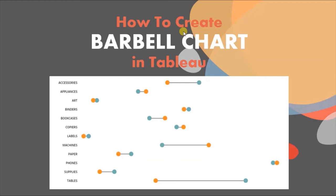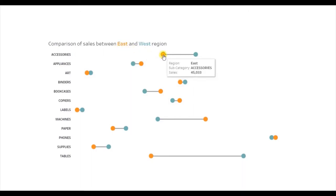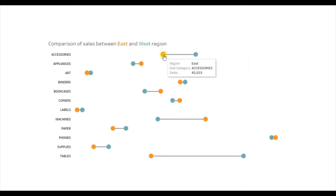Let me first show you the demo of what we will be doing today. Here I am comparing the sales between east and west region for different subcategories using a barbell chart. From the title you can figure out that the east region is represented by the orange circle and the west region is represented by the blue circle, and the line between these two circles gives us the difference in sales between the two regions.